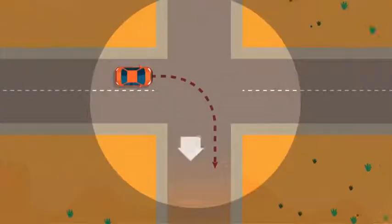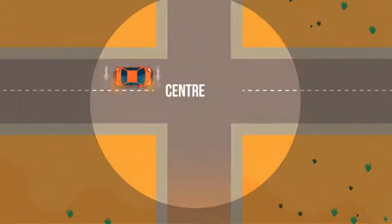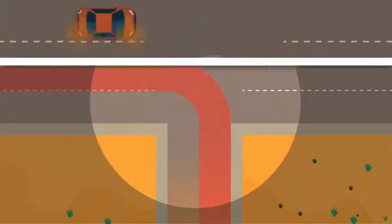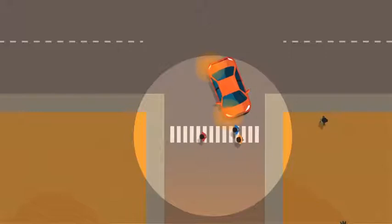When you are turning right, use your right blinker lights. Drive close to the centre line of the road. If there are people walking across the road you are entering, let them pass first.